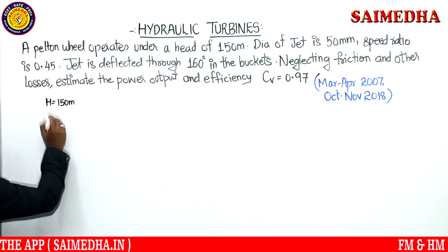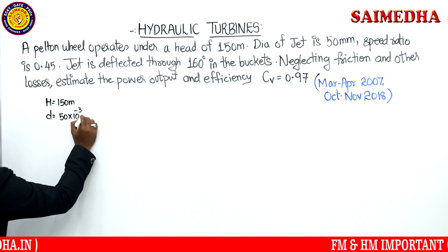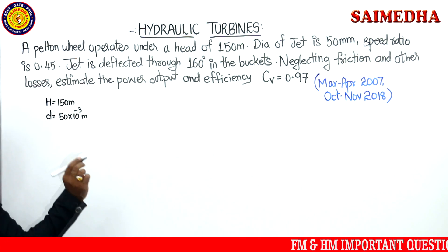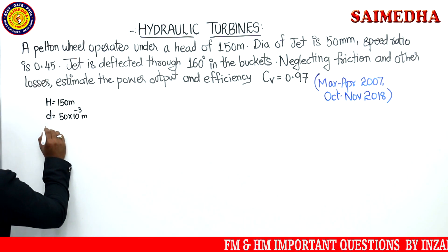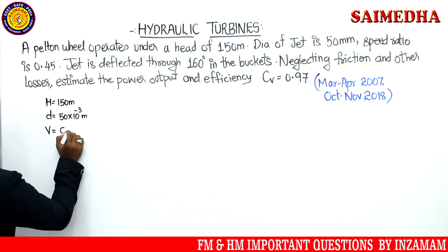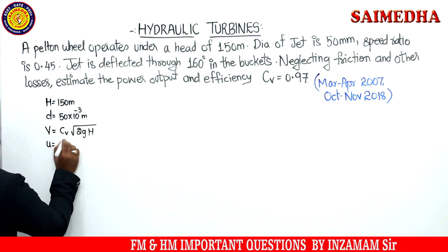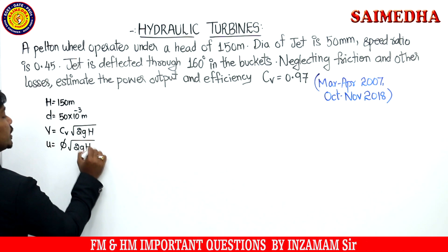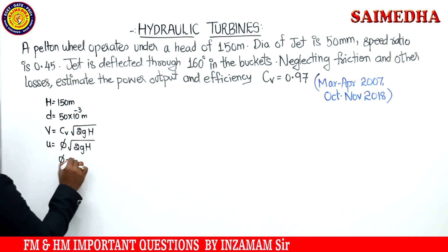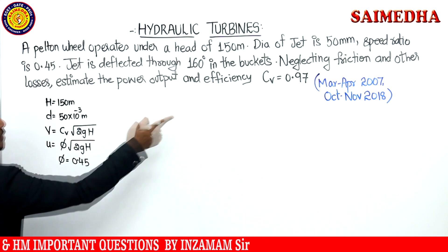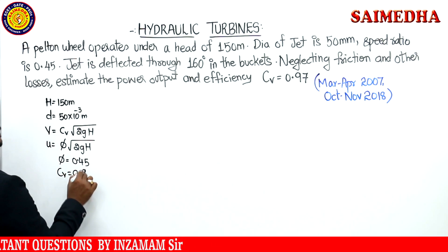Given data: head H = 150 meters. Diameter of the jet, small d = 50 mm = 50 × 10⁻³ m. Speed ratio φ = 0.45 and coefficient of velocity CV = 0.97. The jet deflection angle is 160 degrees, so blade angle φ = 180 − 160 = 20 degrees. Neglecting friction and other losses, we need to estimate the power.